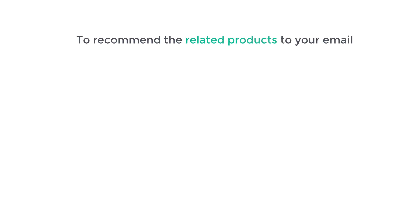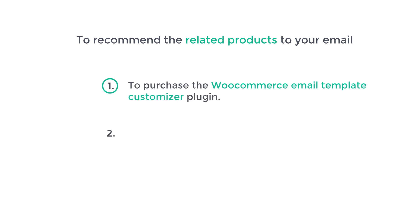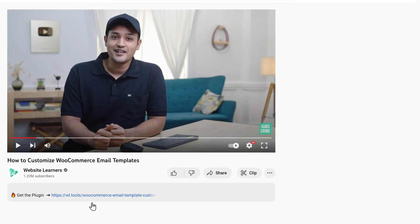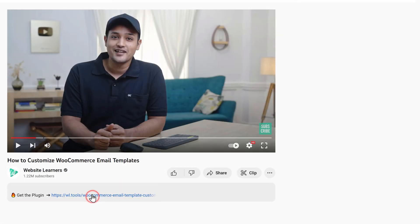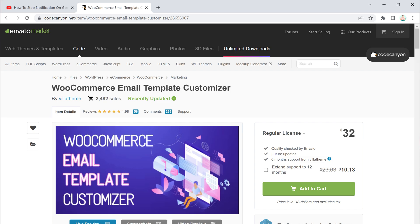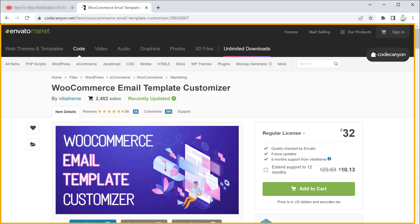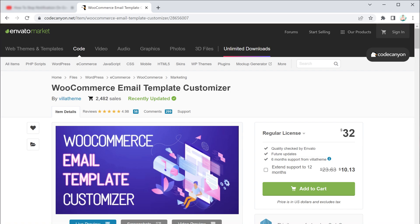To recommend related products in your email, we are going to do two steps. The first step is to purchase the WooCommerce Email Template Customizer plugin. To purchase it, just click the link below this video and it will take you to this page. Now click Add to Cart and click Go to Checkout.